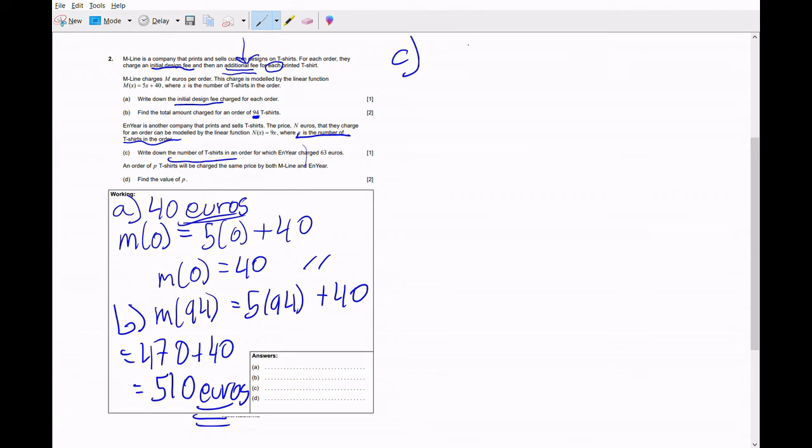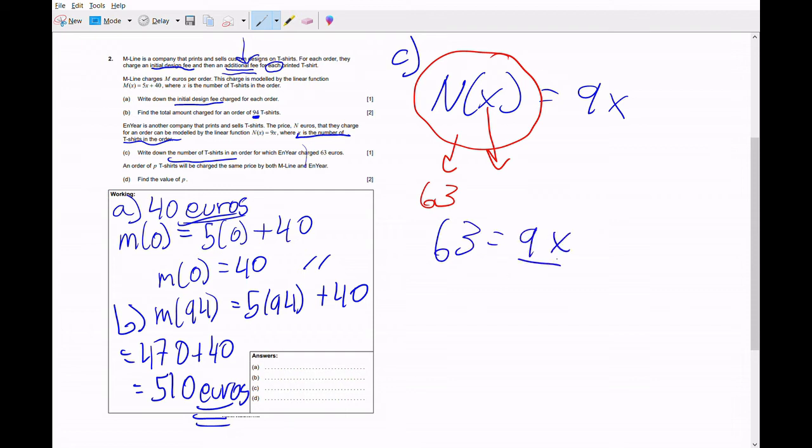For part C we need to find x. If it tells us that they charge 63 euros, and the function, this whole value is going to be 63, and the x is still going to be a variable, so we would have to write it this way: 63 equals 9x. We divide both sides by 9 to get x alone. We end up with x being equal to 7. So the answer is 7 shirts.